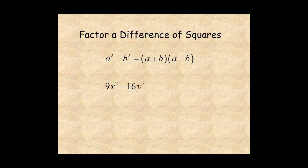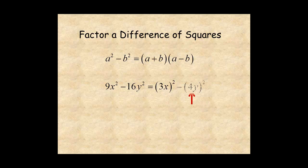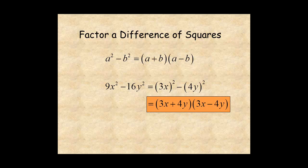Here's an example of a difference of squares with two variables. 9x squared minus 16y squared is 3x squared minus 4y squared, which factors as 3x plus 4y times 3x minus 4y.